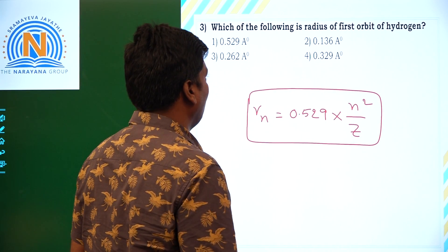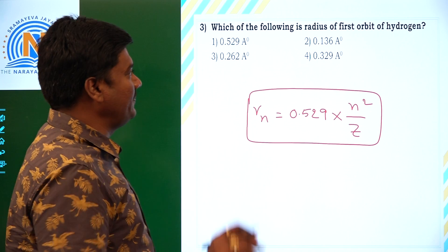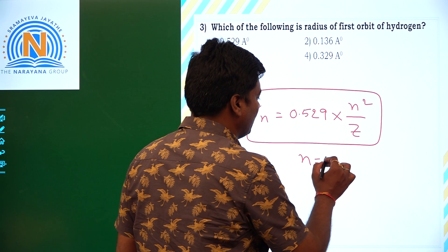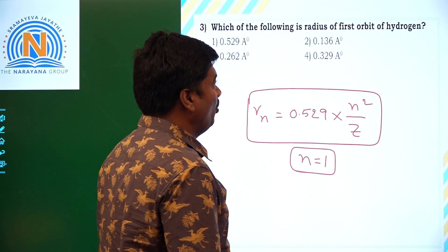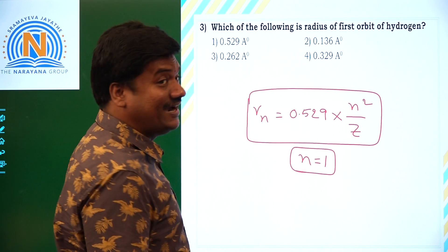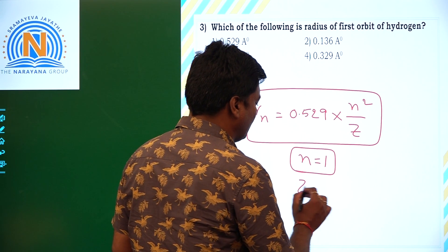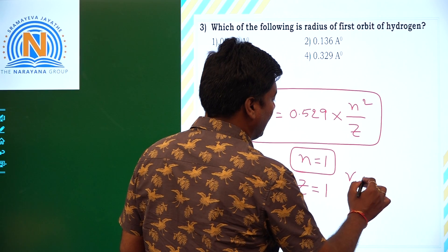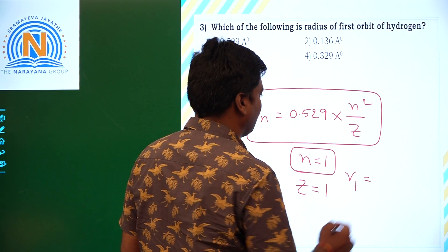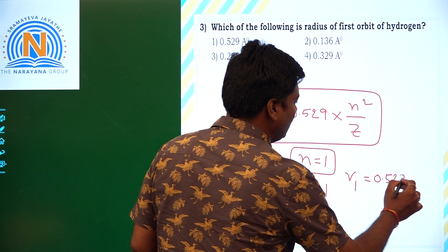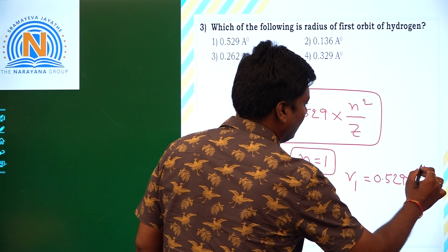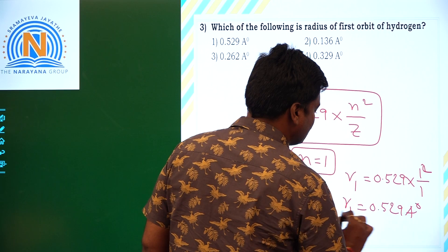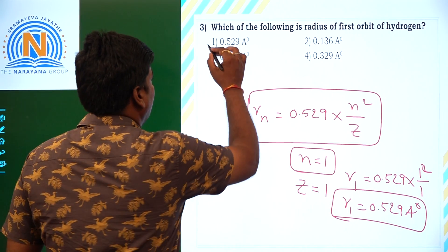For the first orbit, n is equal to 1. And for hydrogen atom, the atomic number z is also equal to 1. Substituting these values: r₁ = 0.529 into 1 square by 1, which gives r₁ equal to 0.529 angstrom units. So the first answer we can take.